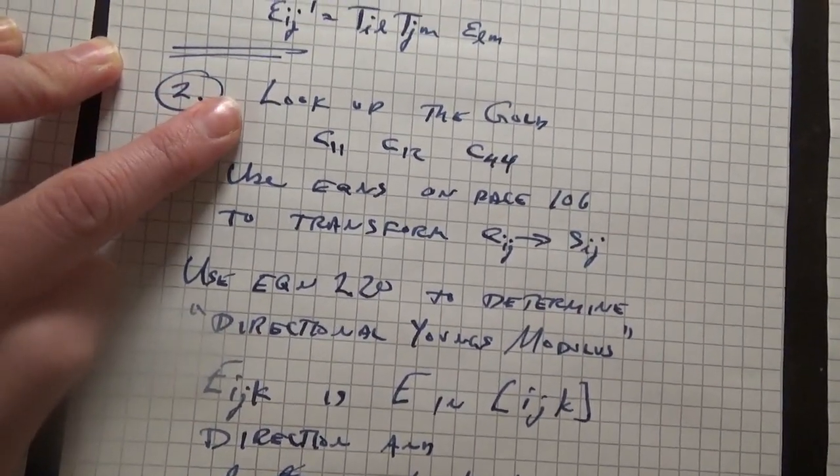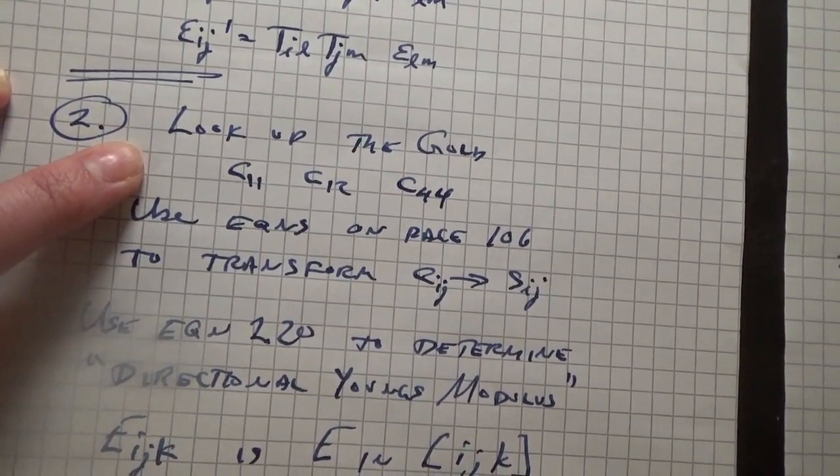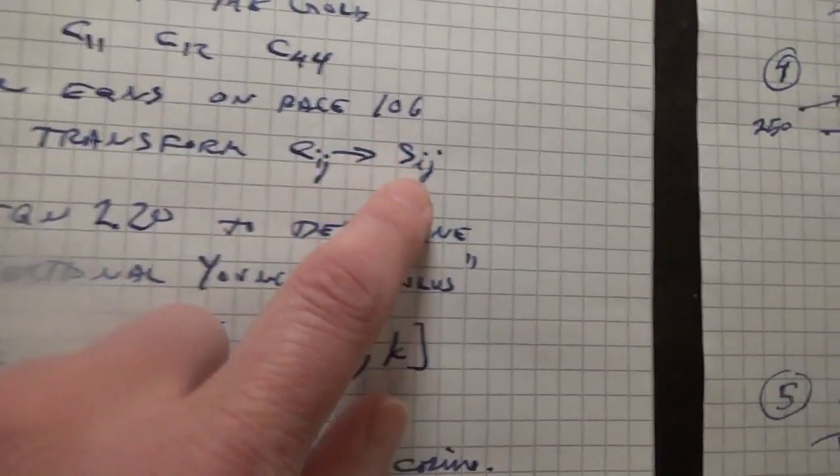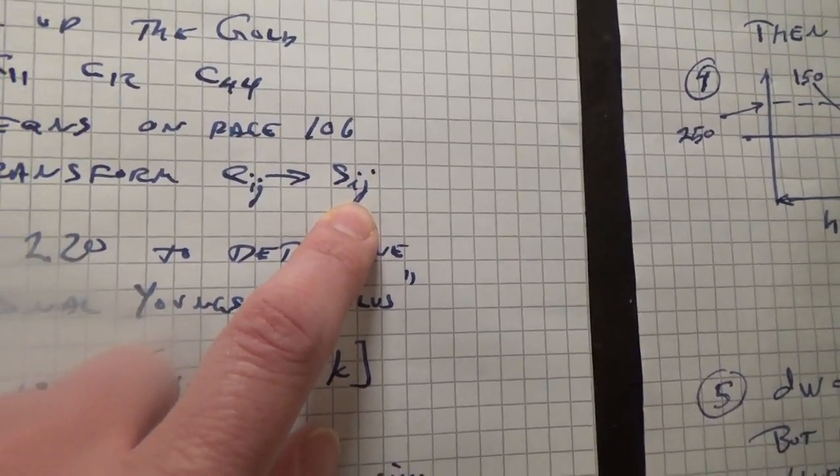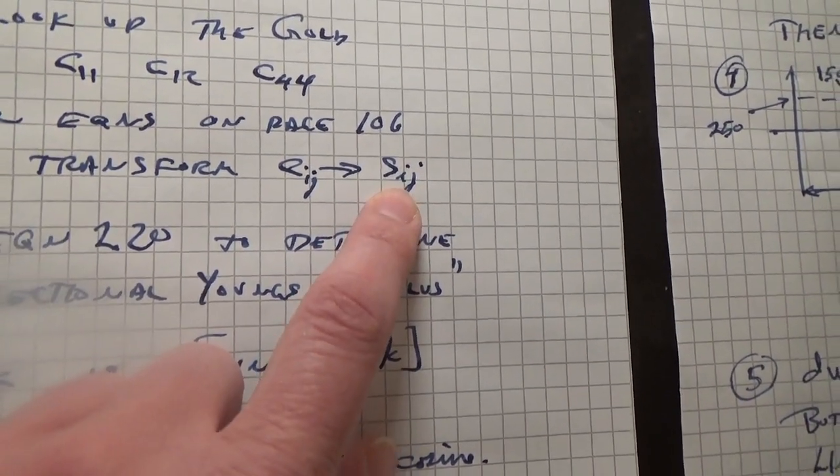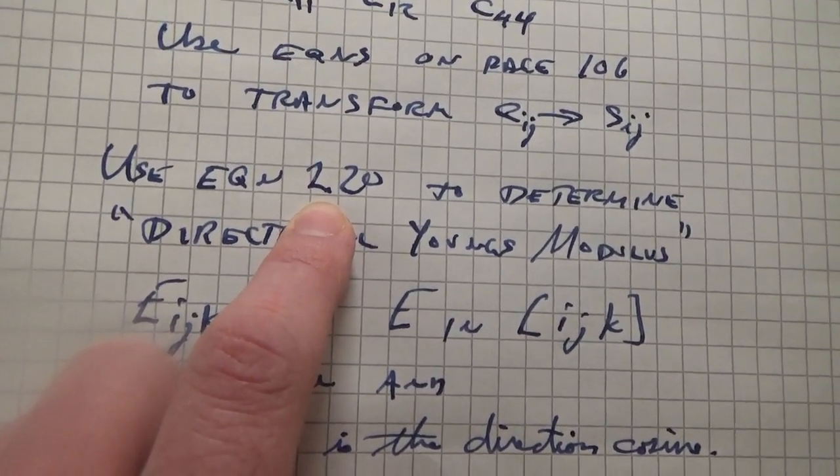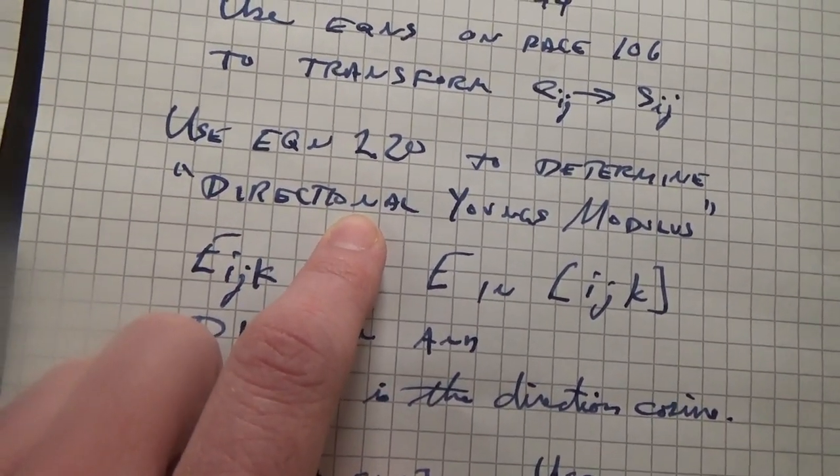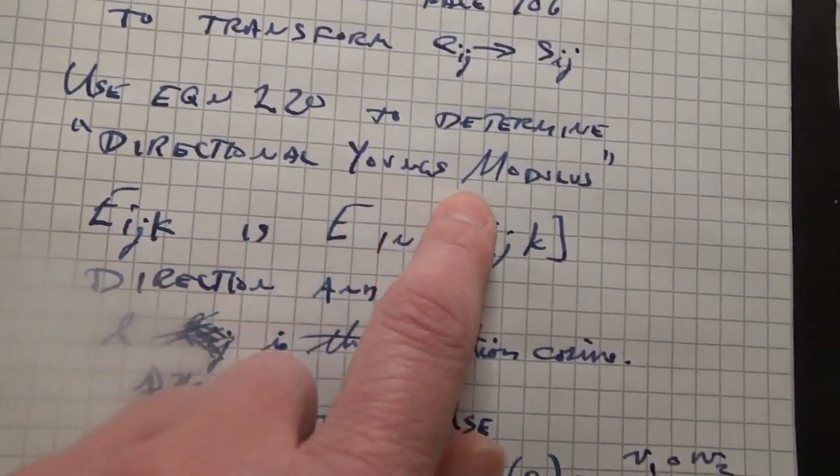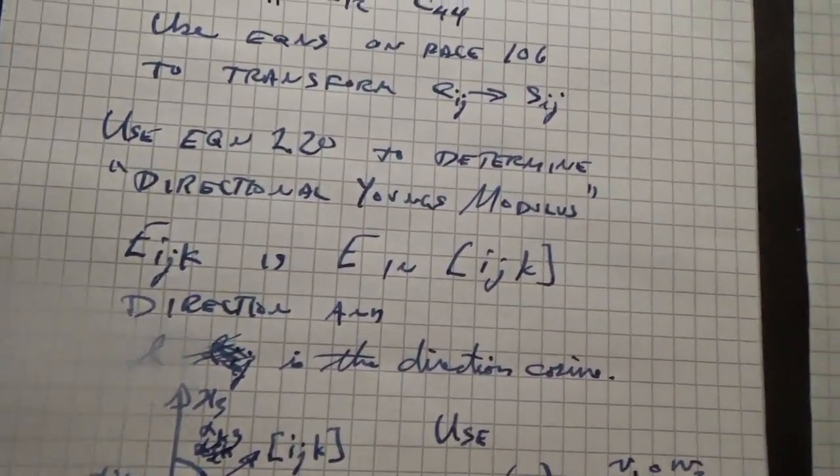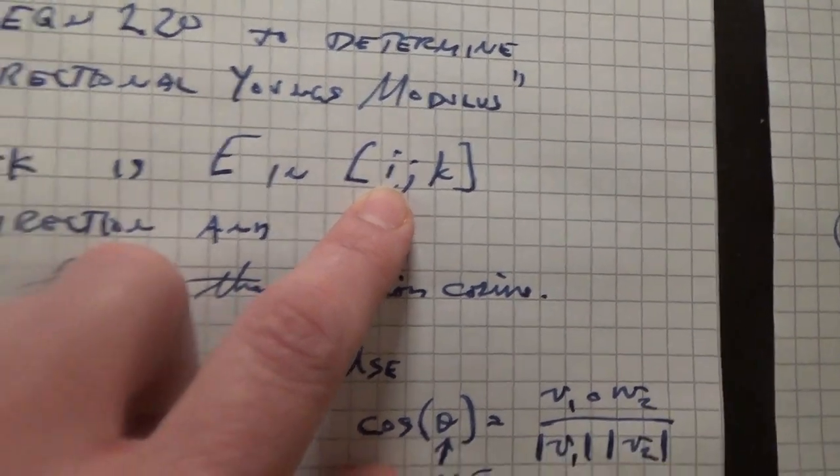Problem 2. First thing is to look up the elastic constants of gold and then transform the elastic constants into the compliance components. And then we are going to use direction equation 2.20 from your textbook to determine the so-called directional Young's modulus, which is actually just the uniaxial tension in the i, j, k direction.